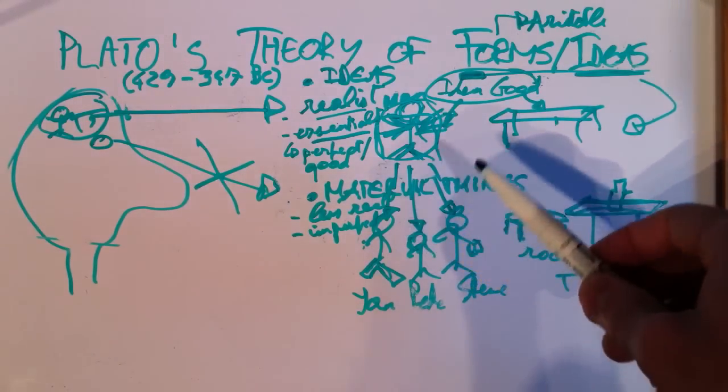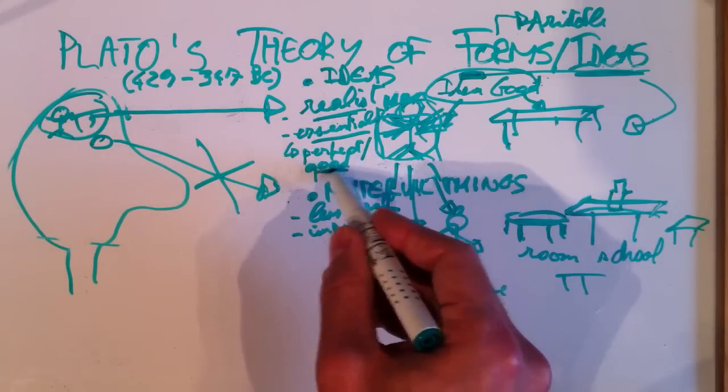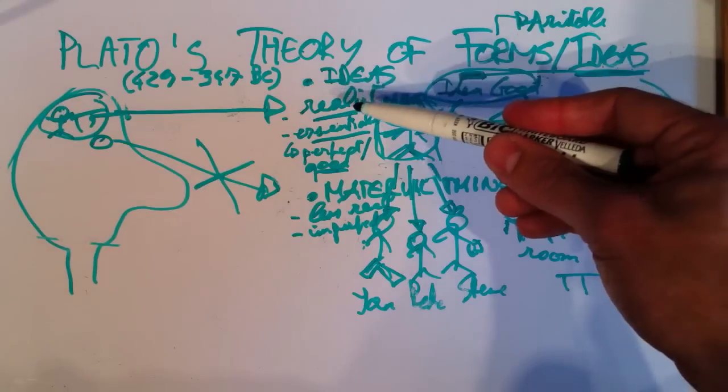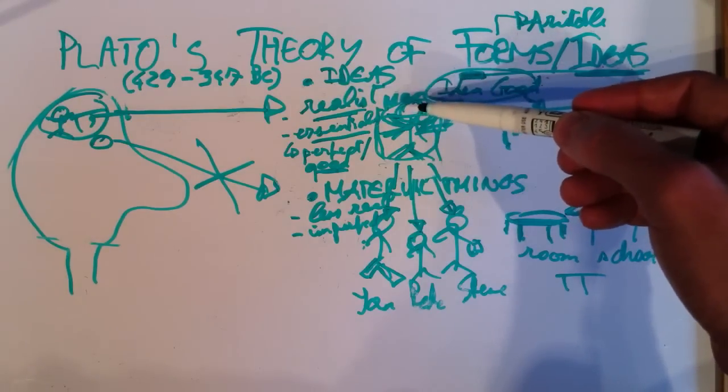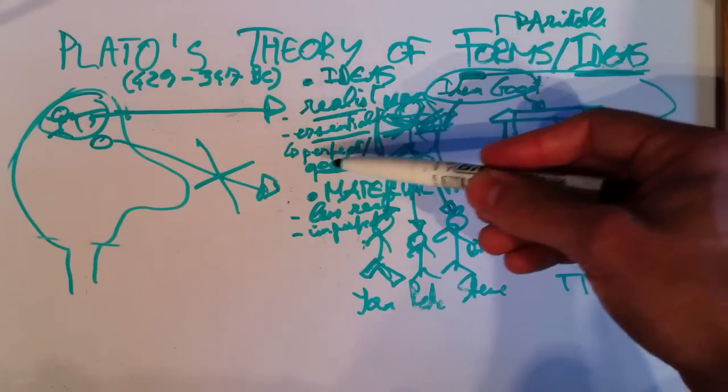So, goodness is present both in man as well as in tables. And it's less present in material things. And for Plato, being real and being good is kind of the same thing.